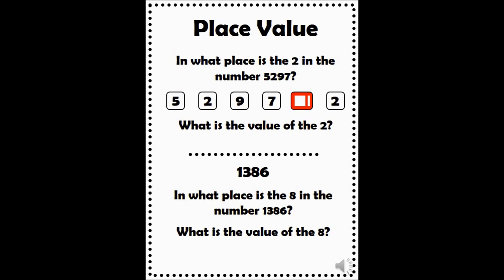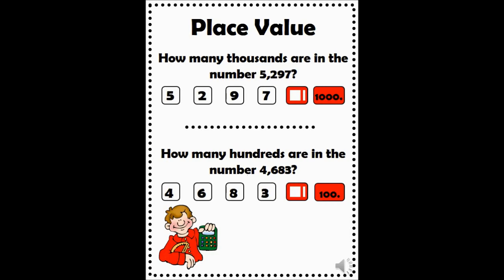Let's try another number. Press clear but do not press memory clear. Enter the number 1386. Use the place value button to answer these questions: in what place is the 8, and what is the value of 8? Here is another way to use the place value button. Press clear but do not press memory clear. Enter the number 4683. Press the place value key and the red 100 key. How many hundreds are in the number 4683? You will notice that the calculator says there are 46 hundreds in this number. This is a really hard concept to understand. It might help to build the number with place value blocks.